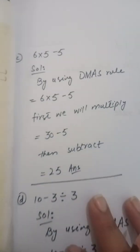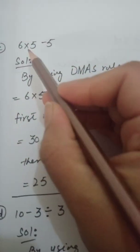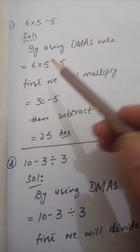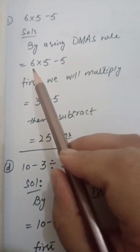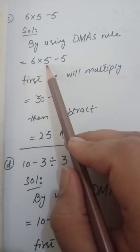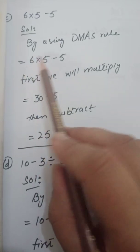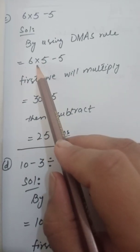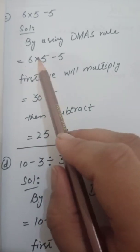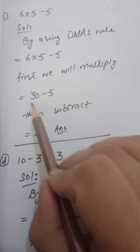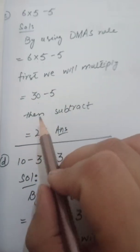Part number C, see we have 6 multiply by 5 minus 5. In solution what will you write, by using DMAS rule. First we will multiply. First we will multiply. Okay students. What should be your second step? You have to rewrite the question. Now first we will multiply. First we will multiply. 6, 5 times 30 will come. Minus 5. Then we will subtract. 25 will be your answer.